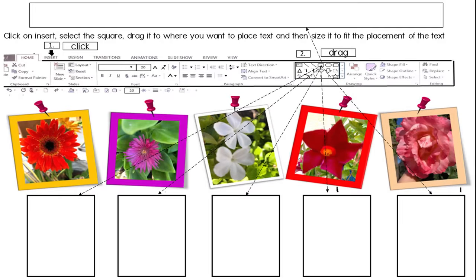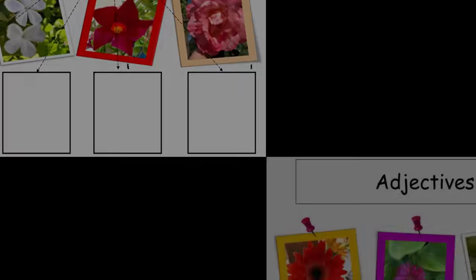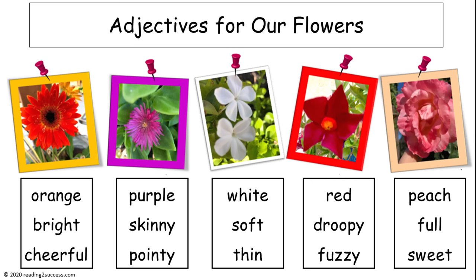Click on insert and select the square. Drag it to where you want kids to place text and size it so that the text will fit. Do that for each text box kids will need. Now we see the completed example.